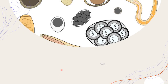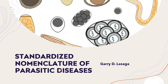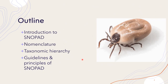This presentation will deal with the classification of parasites on the basis of their relationships and the naming of parasites in accordance with the Standardized Nomenclature of Parasitic Diseases, or SNOPAD. The first part will cover the introduction to SNOPAD, defining nomenclature, and discussing taxonomic hierarchy and the guidelines and principles of SNOPAD.